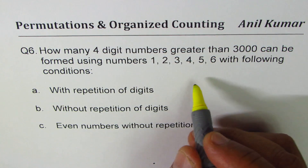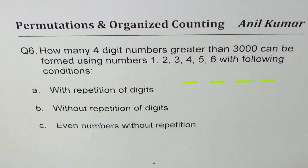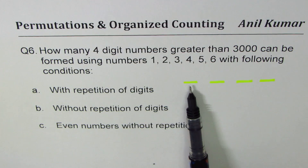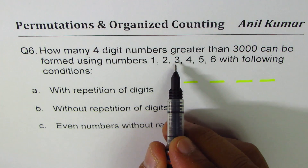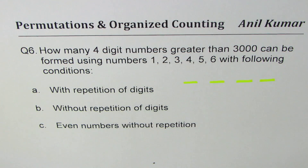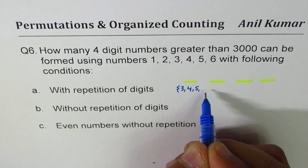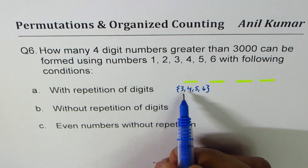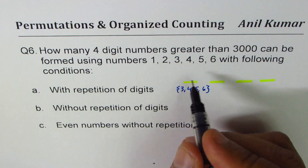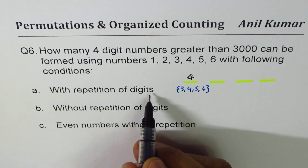We want four-digit numbers greater than 3000. Let's say these are the four digit positions. Greater than 3000 and we have to use the numbers one through six. In the first place we can have numbers three, four, five, or six — so there are only four numbers which can take the first place. So we write four on top.